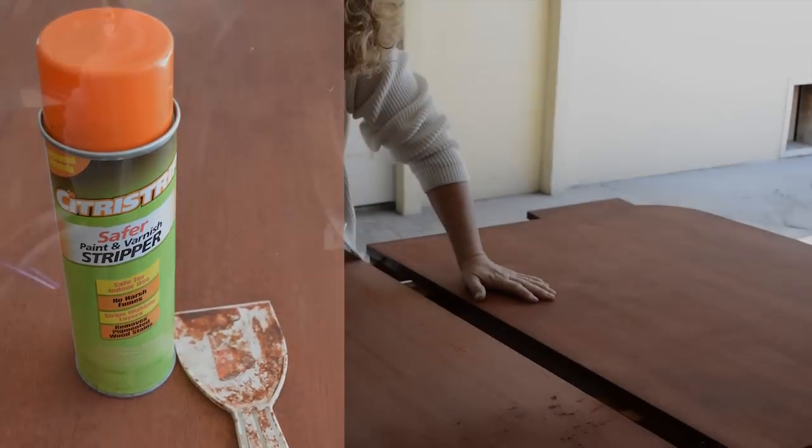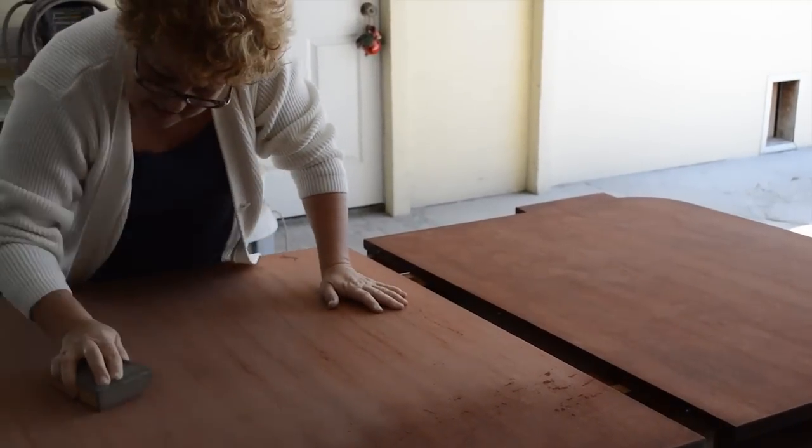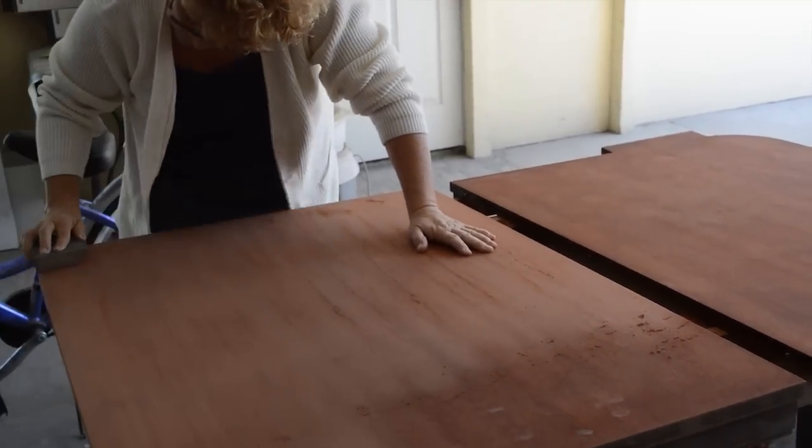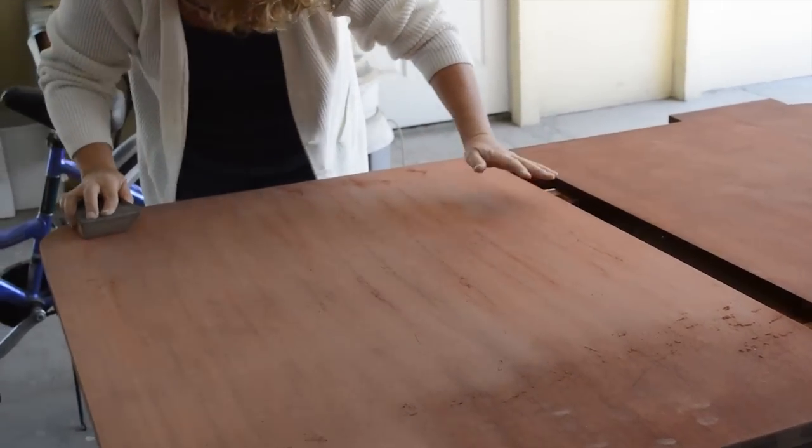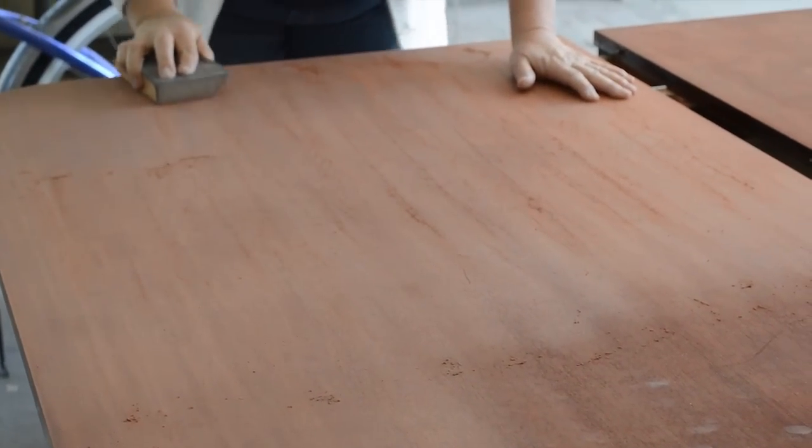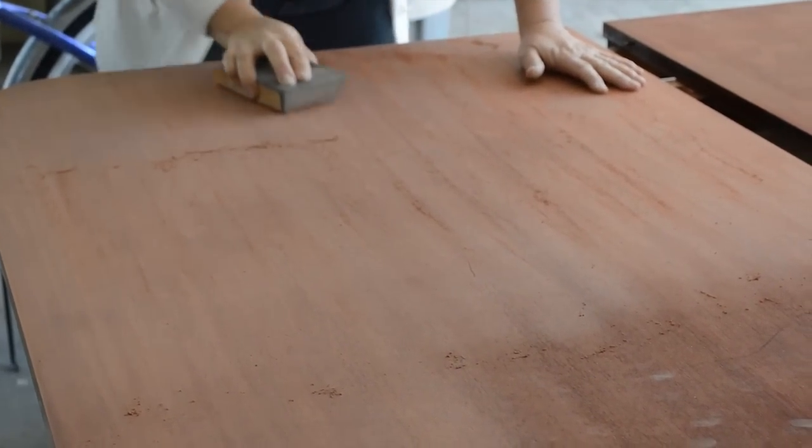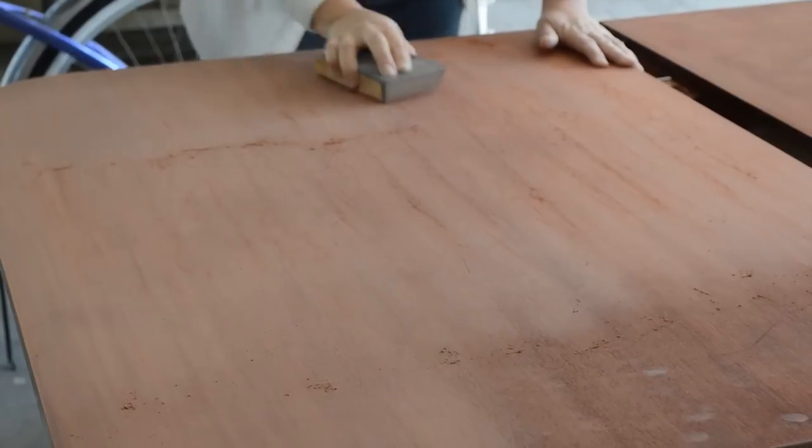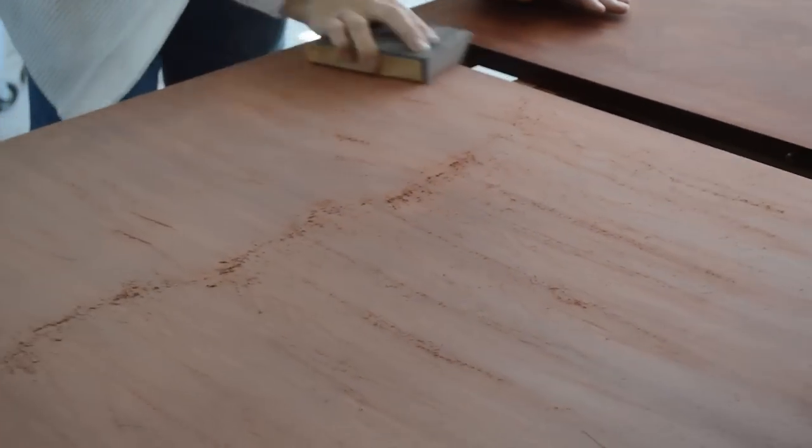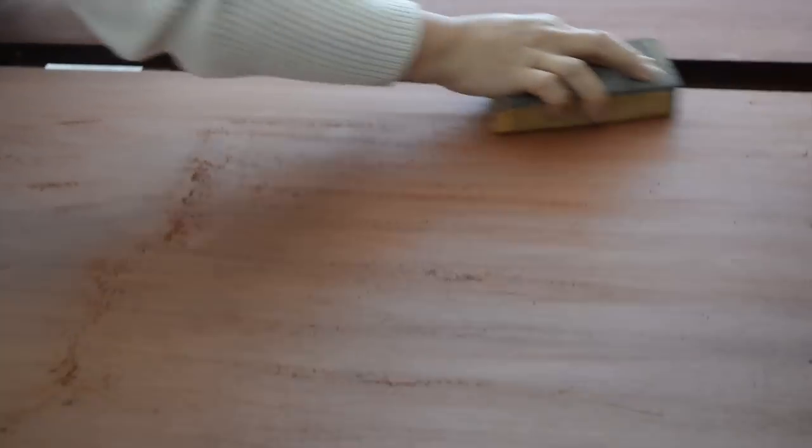After the old finish has been stripped, the surface needs to be thoroughly sanded. Start with 100 grit sandpaper and then gradually work your way to a finer grit sandpaper, finishing with 220 grit. Always be sure to sand in the direction of the wood grain. Before moving on to the next step, be sure to clean the surface so that it is free from all dust and loose particles.